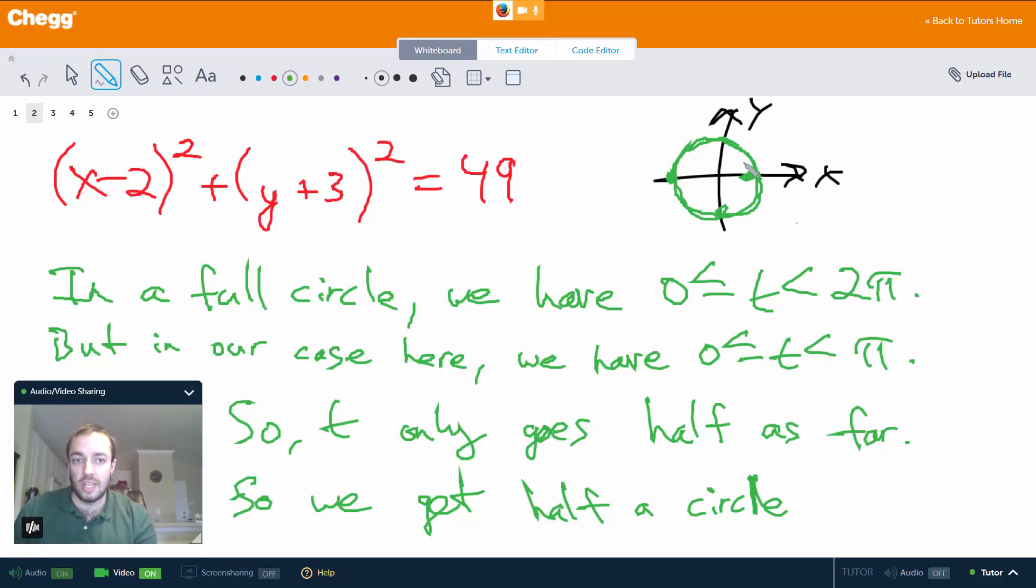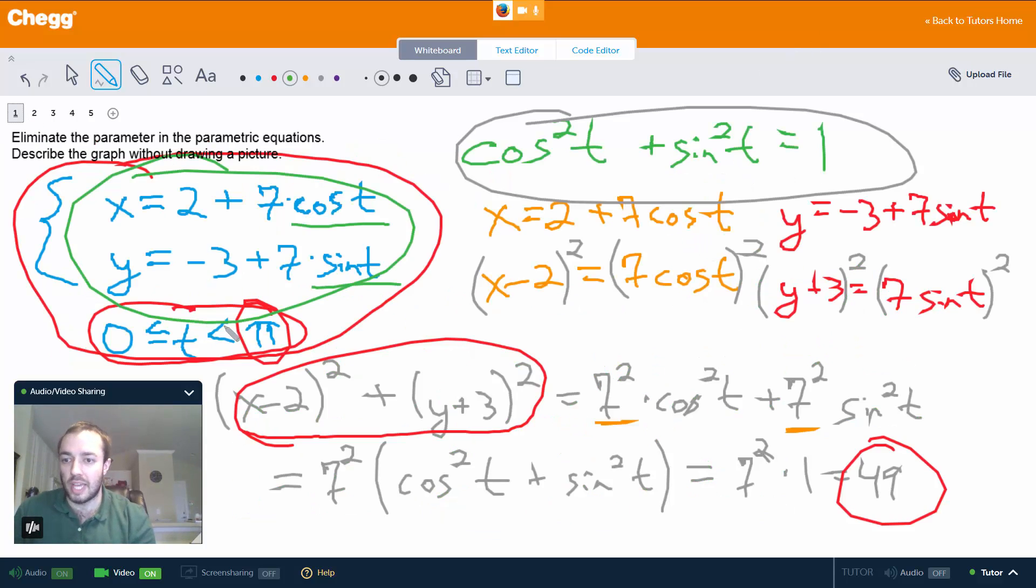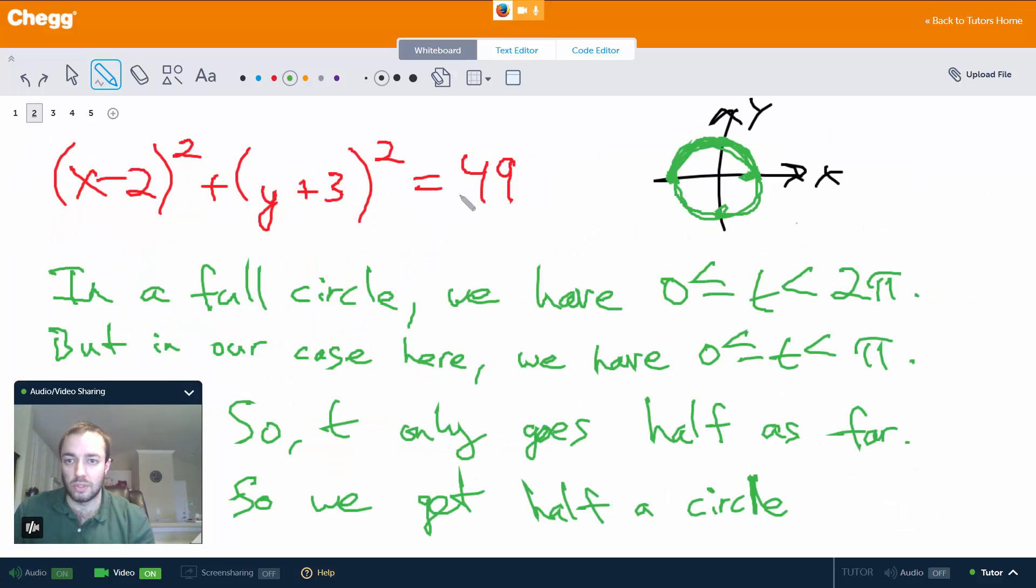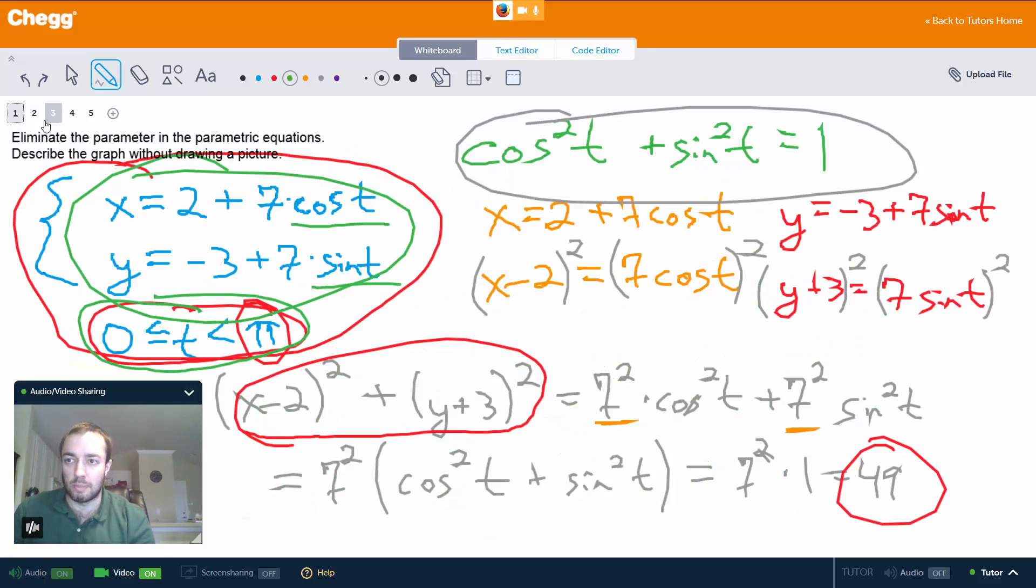So t starts at 0, and then as t increases to π we get this upper half circle here. So again we have to be very careful that we only have 0 ≤ t < π here. If this were 2π, then yeah we would have the entire circle, but we only have the upper half circle.